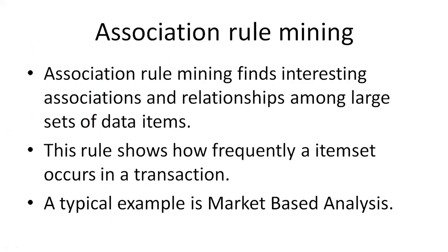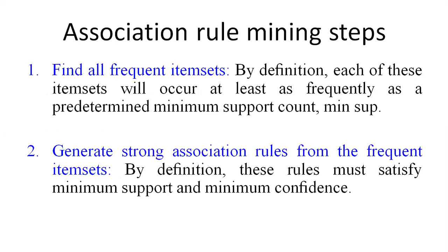This rule shows how frequently items occur in a particular transaction. A typical example is market basket analysis. In market basket analysis, you go to the supermarket and find items like onions, potatoes, bread, and milk. You analyze those things — for example, if you buy bread, what other items you buy together with it, such as milk. That is called market basket analysis.